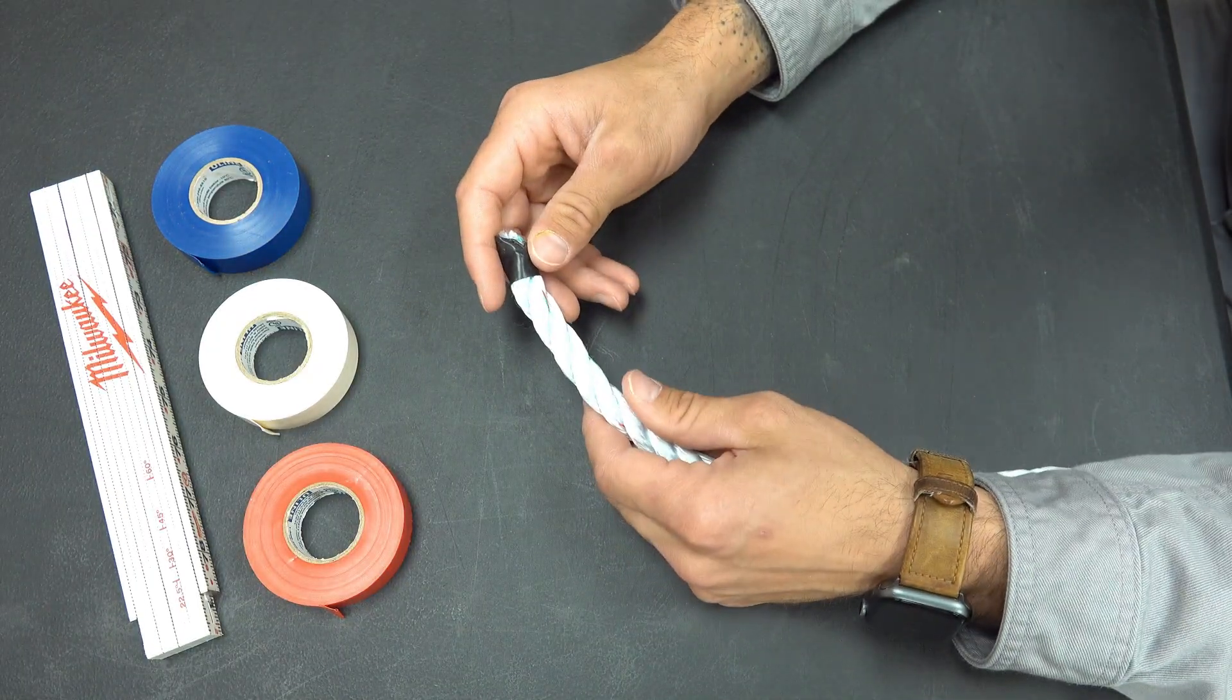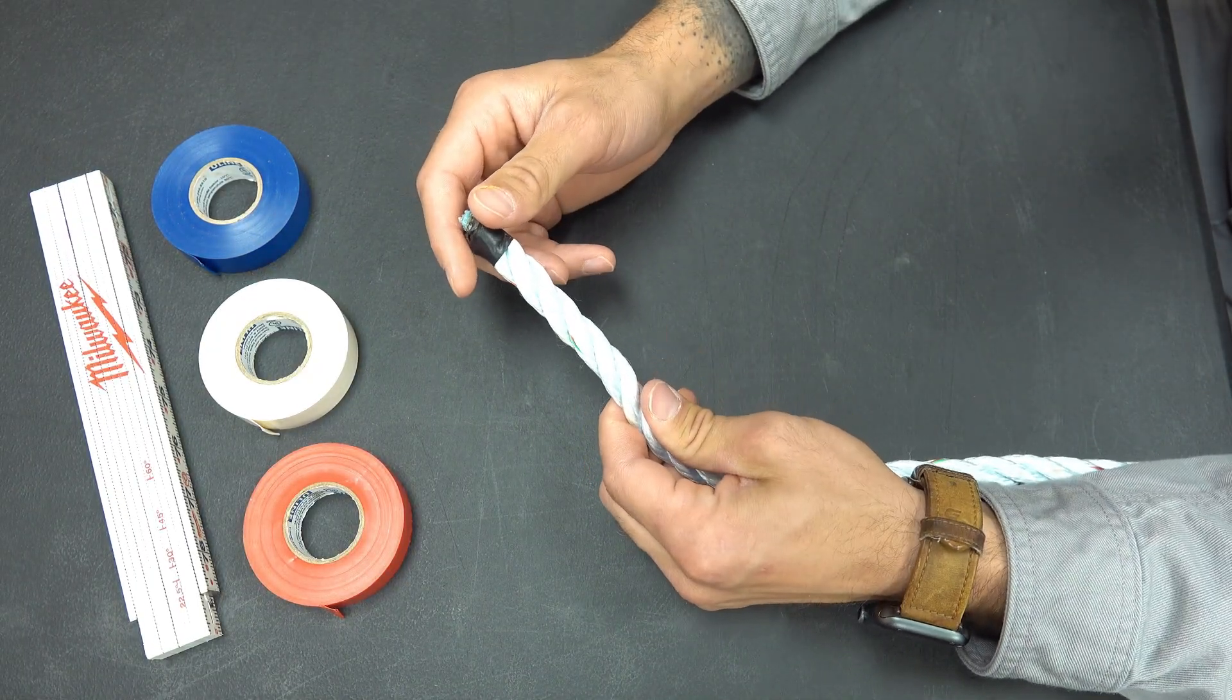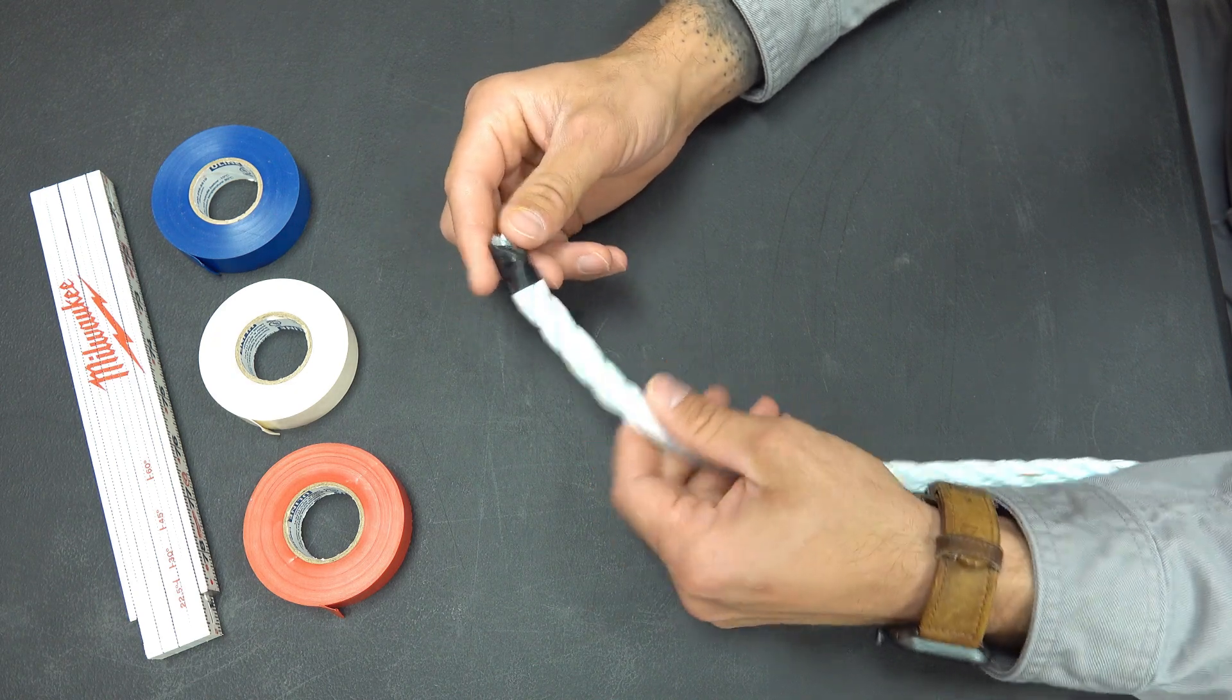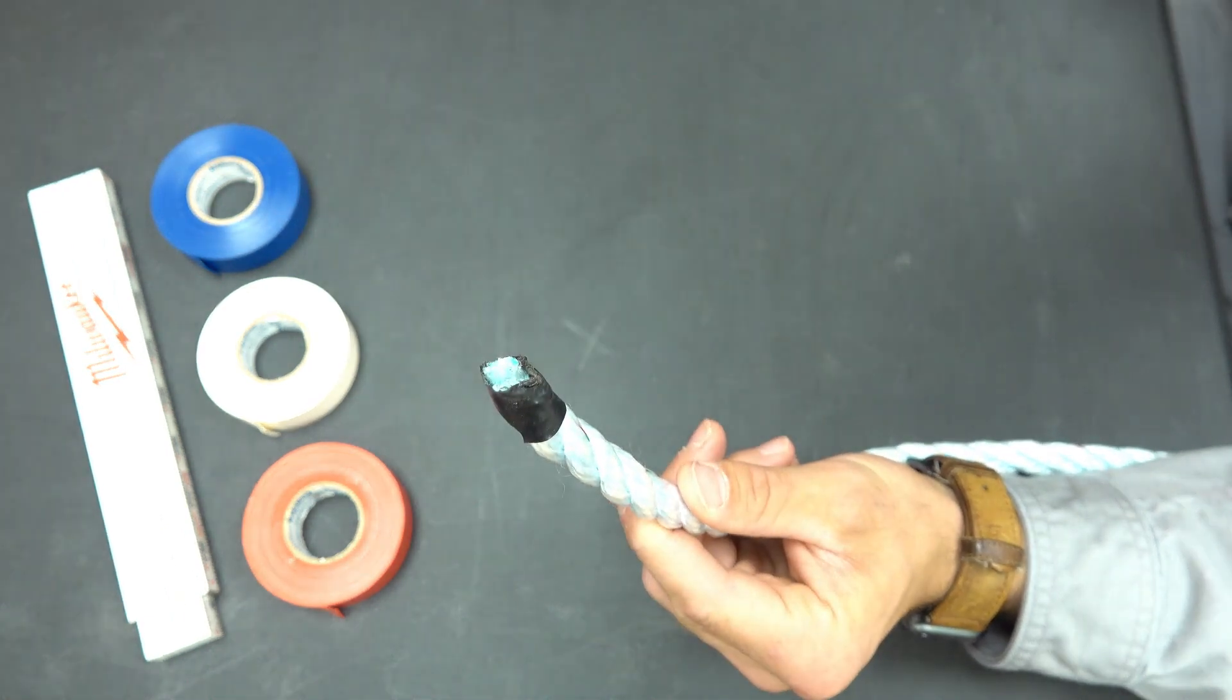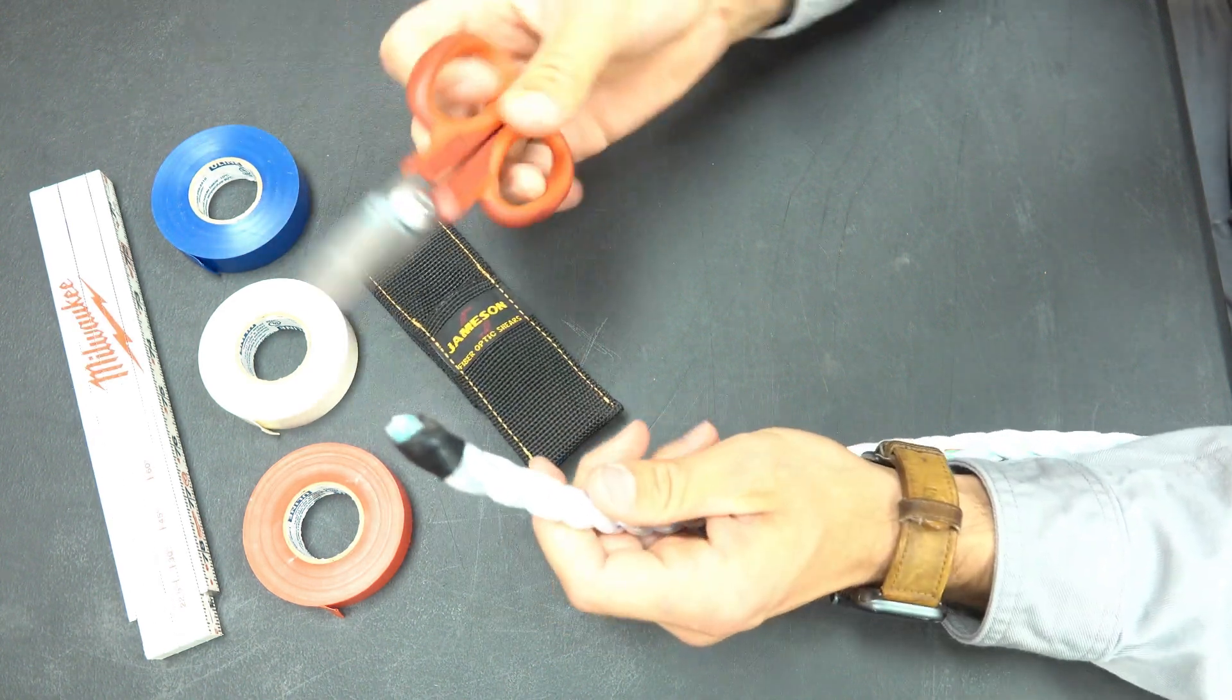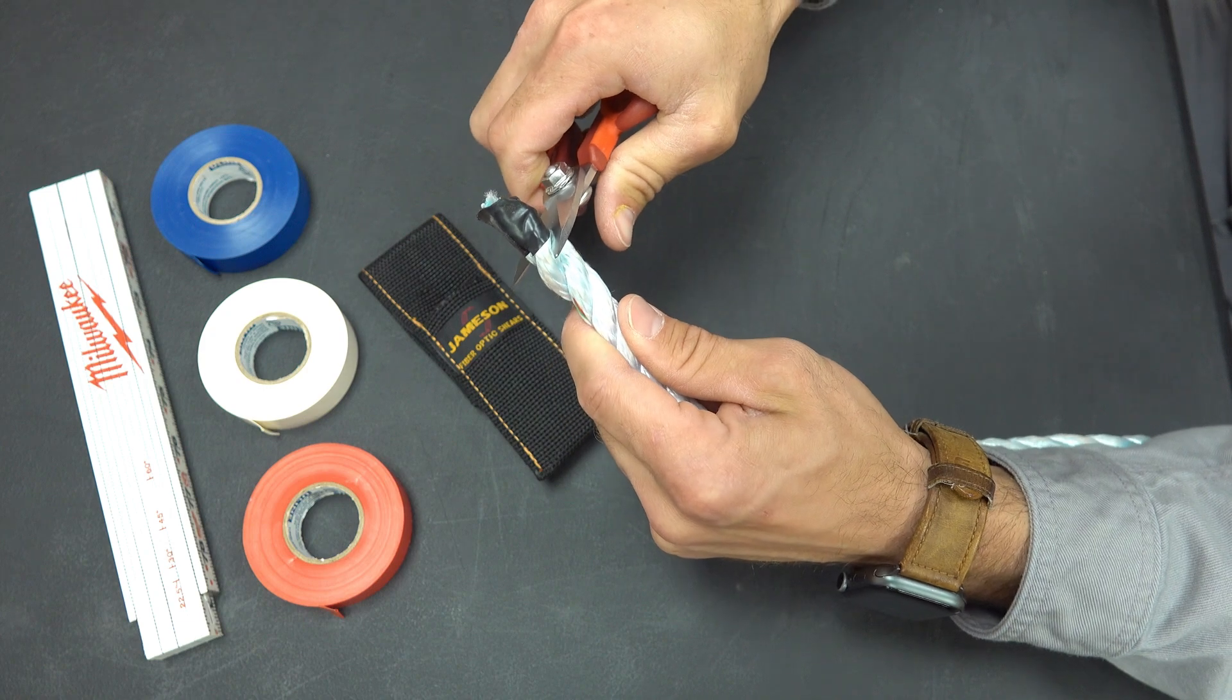Hello everybody. In today's course we are going to be doing the three strand eye splice. The first step is separating each of these individual strands, and by doing so we're going to take our Jameson scissors here and cut the rope.